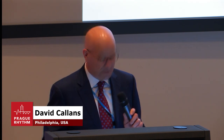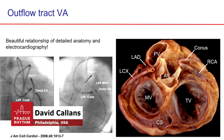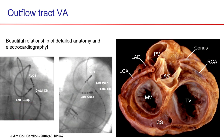I'm going to concentrate on outflow tract tachycardias, both PVCs and VTs. I really like outflow tract tachycardias. The anatomy is complex with sphinx-like folding. It's not really the right ventricular outflow tract and the left ventricular outflow tract—it's really the anterior outflow tract and the posterior outflow tract. The right ventricular outflow tract is actually leftward of the left ventricular outflow tract.